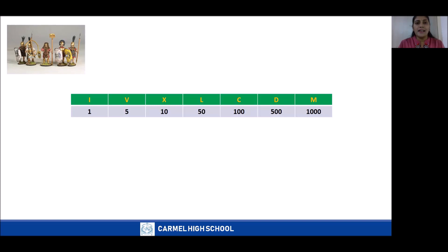Roman numerals have seven symbols of English alphabets. They are I, V, X, L, C, D, and M, for which I equals 1, V equals 5, X equals 10, L equals 50, C equals 100, D equals 500, and M equals 1,000 in Hindu-Arabic numerals.